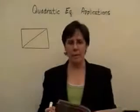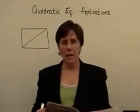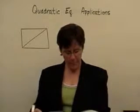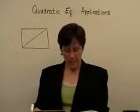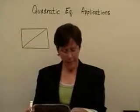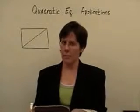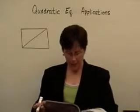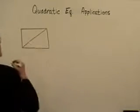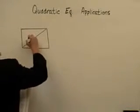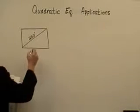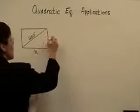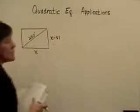Here's another application problem involving quadratic equations — it also uses the Pythagorean theorem. Number 8 in section 3: the width of a rectangular parking lot is 51 feet less than its length, very similar to the last problem. Determine the dimensions of the parking lot if it measures 250 feet diagonally. I'll put 250 feet on the diagonal. The width is 51 feet less than the length, so let x be the length and x minus 51 equal the width.